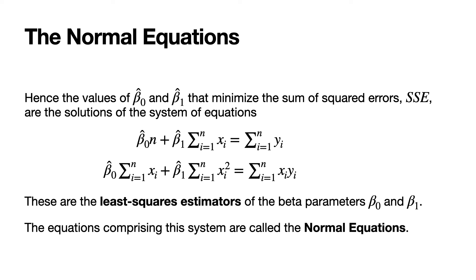The values of beta zero hat and beta one hat that minimize the criterion function — that is, the sum of squared errors or SSE — are the solutions of the system of equations shown here. These values of beta zero hat and beta one hat that solve that system are the least squares estimators of the beta parameters beta zero and beta one. The equations comprising this system are called the normal equations.